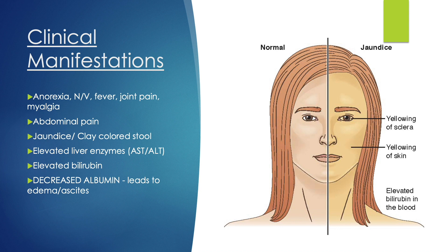Clay-colored stools occur because bilirubin is what gives stool its brown appearance, and since it's not being excreted, stools become clay in color. Liver enzymes AST and ALT will be elevated, as will bilirubin. Albumin will be decreased, causing fluid to seep out of capillaries into surrounding tissue, resulting in edema and ascites — fluid buildup within the abdominal cavity. An image shows normal skin alongside jaundiced skin, demonstrating yellowing of the skin and eyes due to elevated bilirubin.